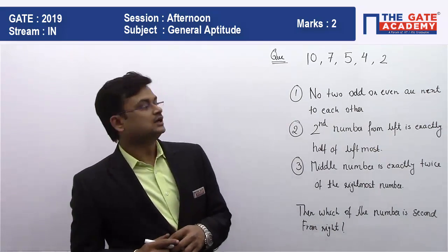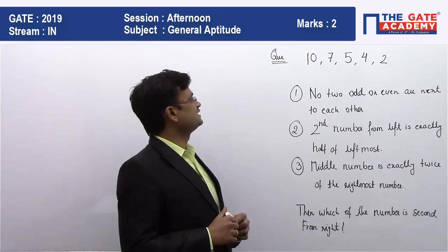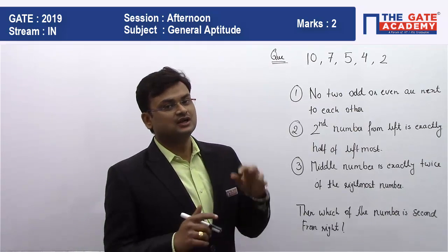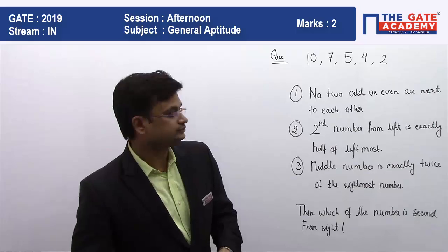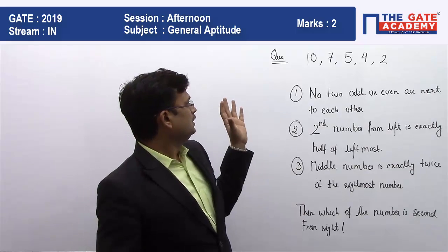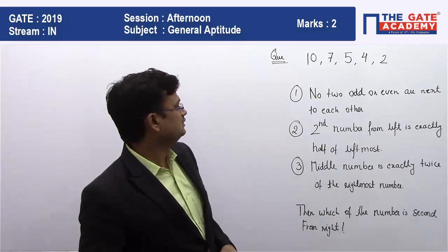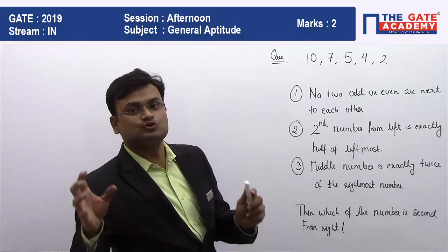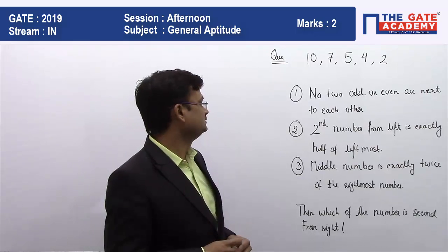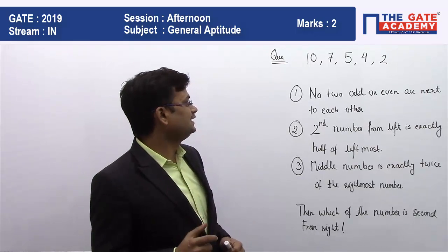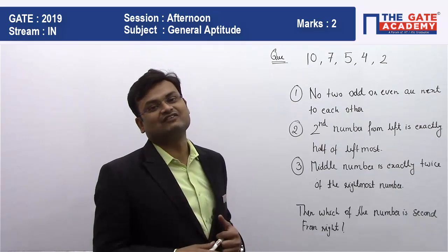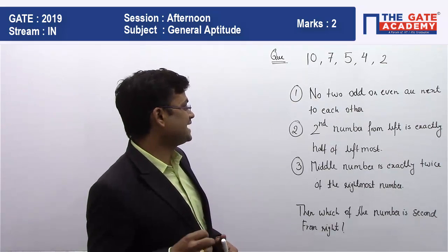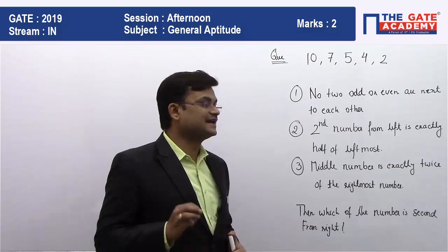Let's read out the question. There are five numbers given: 10, 7, 5, 4, 2, and we have to arrange these numbers from left to right. There are three conditions given. First: no two odd or even numbers are next to each other. Second: the second number from left is exactly half of the leftmost. Third: the middle number is exactly twice the rightmost number.